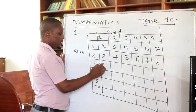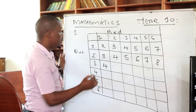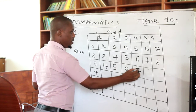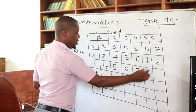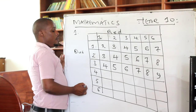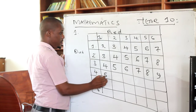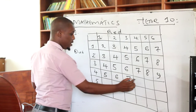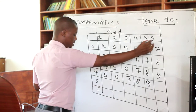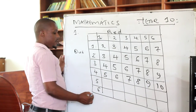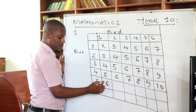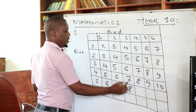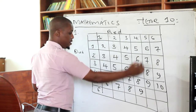Then for the next row: 1 plus 3 is 4; 2 plus 3 is 5; 3 plus 3 is 6; 4 plus 3 is 7; 5 plus 3 is 8; then 9. Again here we have 1 plus 4 is 5; 2 plus 4 is 6; 3 plus 4 is 7; 4 plus 4 is 8; 5 plus 4 is 9; 6 plus 4 is 10. Then: 1 plus 5 gives 6; then 7; then 8; then 9; 5 plus 5 is 10; then 11.